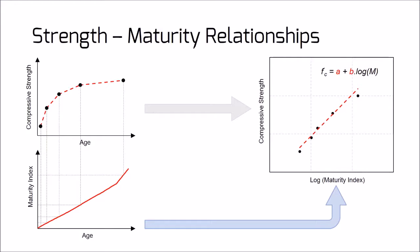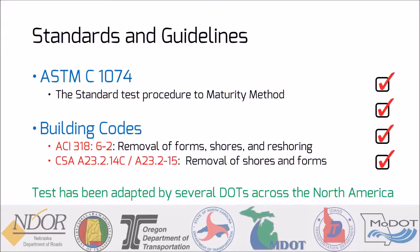In actual practice, one only needs to know the temperature history of concrete to be able to predict the compressive strength. ASTM C1074 has standardized the procedure to develop the maturity-to-strength relationship and strength prediction using the maturity method. Several concrete design codes, such as ACI 318 and CSA A23, accept the maturity method as a verified procedure in predicting early age strength, which is particularly useful when deciding when to open formworks on a construction site.